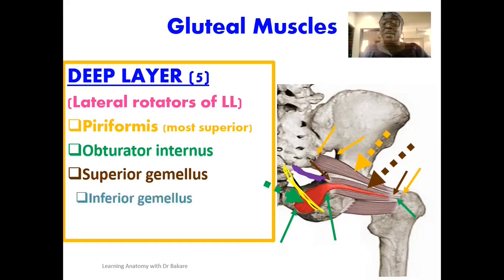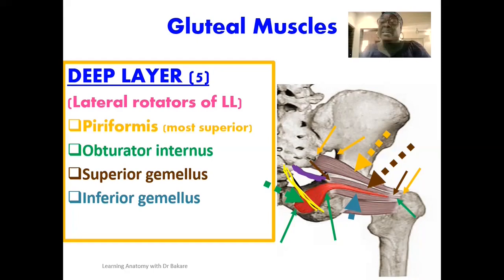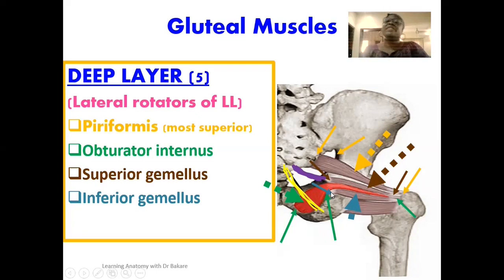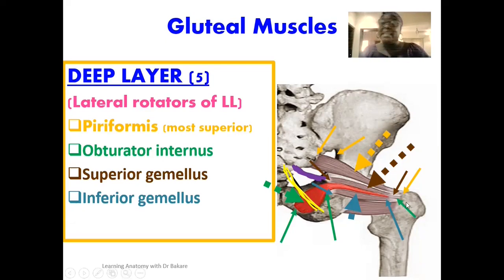Inferior to the obturator internus muscle is the inferior gemellus, highlighted in blue. This muscle is named based on its relationship to the obturator internus — placed inferiorly to it, just as the superior gemellus is placed superiorly. The inferior gemellus originates from the ischial tuberosity and its fibers are also directed laterally to be finally inserted on the greater trochanter of the femur. A number of these deep muscles are inserted on the greater trochanter, which is why they exert actions on the lower limb.